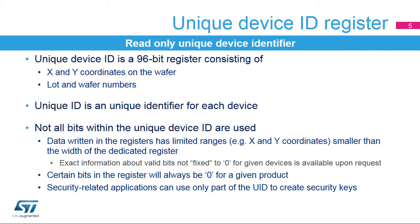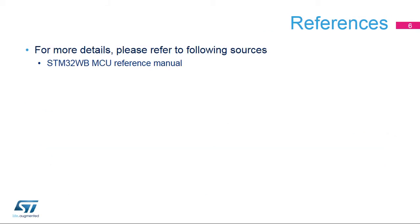As each record within the unique identifier has a given range, like the X and Y coordinates, not all the bits in the device ID are used. This is important for security-related purposes, where the number of bits used is an important parameter. Such security applications can only use part of the device ID and should avoid using the fixed bits. For detailed information, please refer to the device's reference manuals and data sheet.